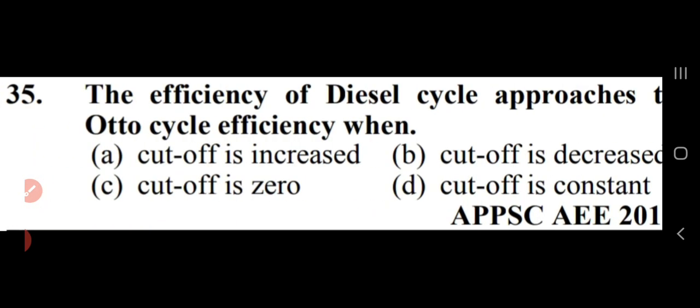The efficiency of the diesel cycle approaches the Otto cycle efficiency when the cut-off ratio is zero — option C is right. When cut-off ratio is zero, the efficiency of the diesel cycle approaches that of the Otto cycle.